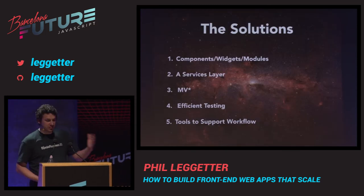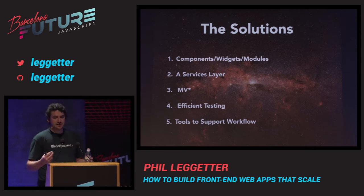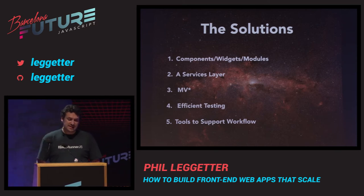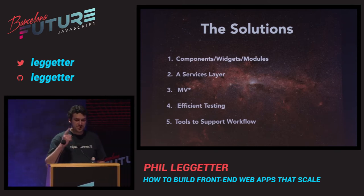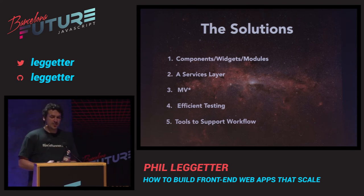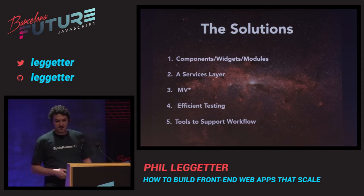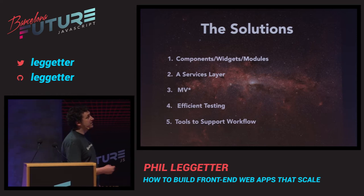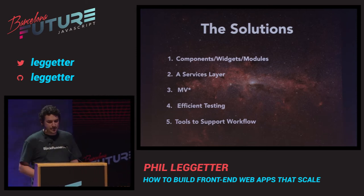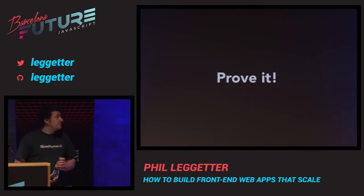I'm going to go straight into the solutions. We're talking about front-end modular web applications. I'll probably say components a million times, widgets once, and modules a lot. We call these things blades — they're vertical slices of functionality in our application. There's a services layer — hopefully I can demonstrate why that really works in front-end apps. MV star goes without saying. You need efficient testing — not just testing, but testing that's reliable and runs quickly. And then we need tools to support this workflow to make sure developers are productive.